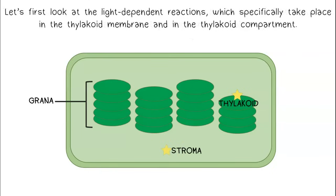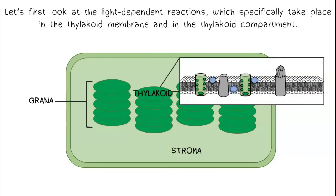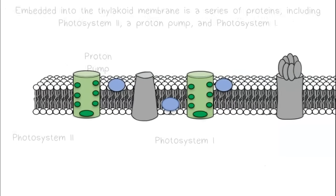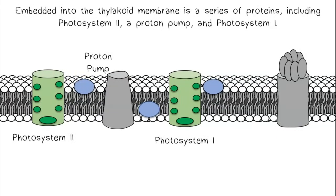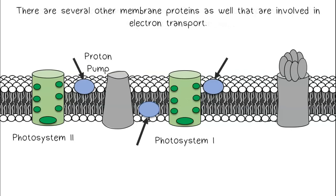Let's first look at the light-dependent reactions, which specifically take place in the thylakoid membrane and in the thylakoid compartment. Embedded into the thylakoid membrane is a series of proteins, including Photosystem II, a proton pump, and Photosystem I. There are several other membrane proteins as well that are involved in electron transport.